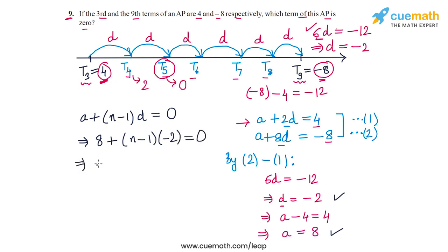Let's expand the expression on the left side. 8 minus 2n plus 2 equals zero. This gives us 2n equals 10, or n equals 5. So the term of the AP that equals zero is the fifth term, exactly what we obtained when solving through visualization.